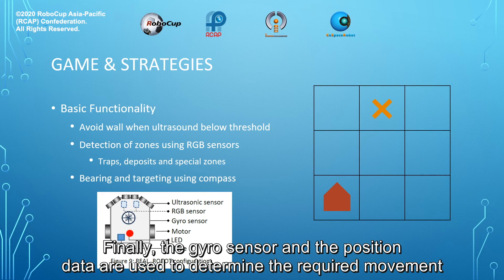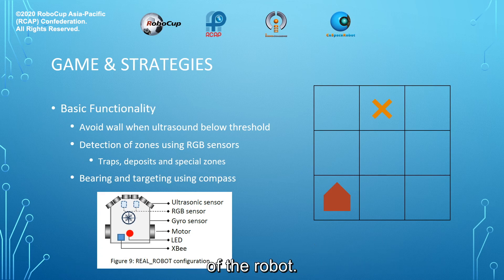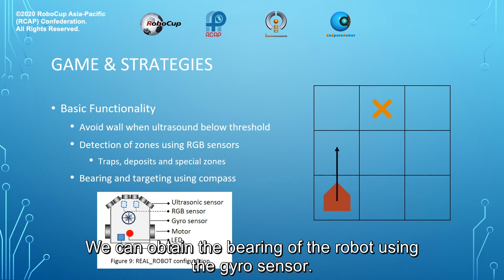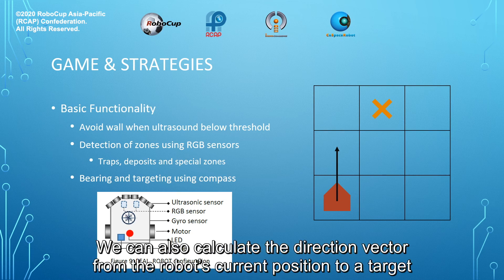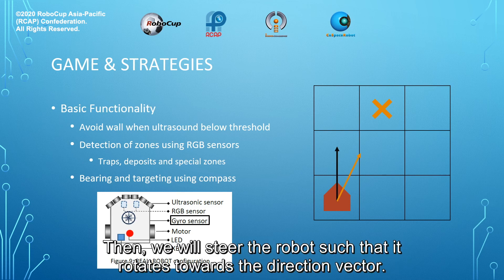The gyrosensor and the position data are used to determine the required movement of the robot. We can obtain the bearing of the robot using the gyrosensor. We can also calculate the direction vector from the robot's current position to a target position. Then, we will steer the robot such that it rotates towards the direction vector.